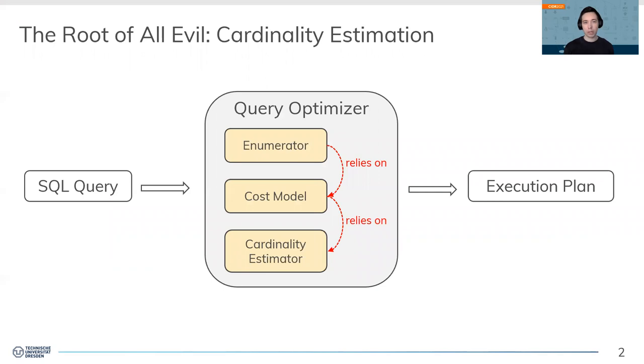When talking about query optimization, researchers seem to agree on one thing: cardinality estimation is the root of all evil. A query optimizer commonly consists of three parts. First, the plan enumerator which spans the search space. Second, the cost model to assess the cost of any given plan prior to its execution.